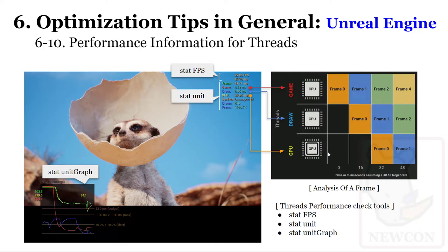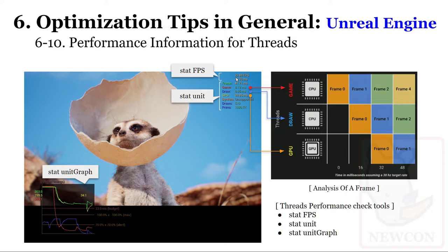퍼포먼스 정보를 확인하는 대표적인 방법으로 stat fps, stat unit, stat unit graph 세 가지 커맨드가 있습니다. stat fps는 현재 화면을 한 프레임에서 처리했을 때의 총 시간을 FPS와 밀리세컨드로 나타냅니다. stat unit은 이를 더 세분화해서 보여줍니다.